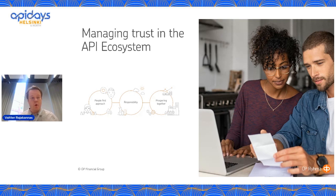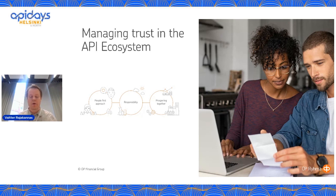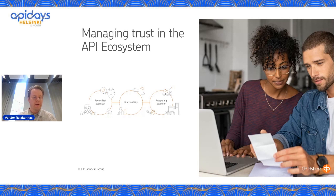Some of you might not know OP Financial Group. OP Financial Group consists of three business segments: the first being retail banking for private and SME customers, the second being corporate banking for corporate and institutional customers, and finally insurance for our insurance customers. One of the key characteristics of OP Financial Group is the cooperative model — OP consists of 108 banks, and the central cooperative I work within is owned by these banks.